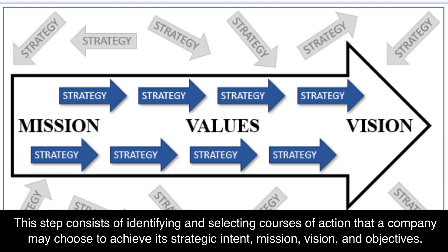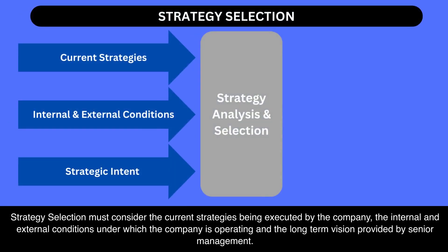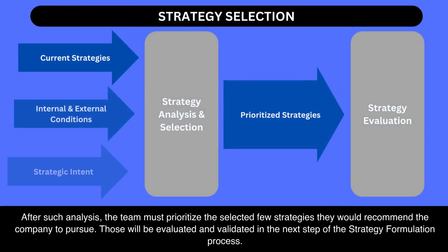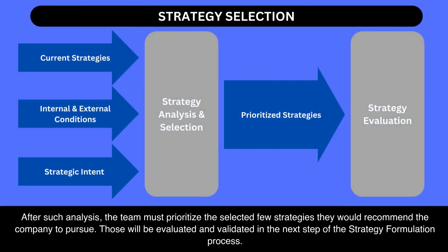This step consists of identifying and selecting courses of action that a company may choose to achieve its strategic intent — Mission, Vision, and Objectives. Strategy selection must consider the current strategies being executed by the company, the internal and external conditions under which the company is operating, and the long-term vision provided by senior management. Based on these inputs, the planning team must identify, evaluate, and prioritize potential strategic alternatives for the company.